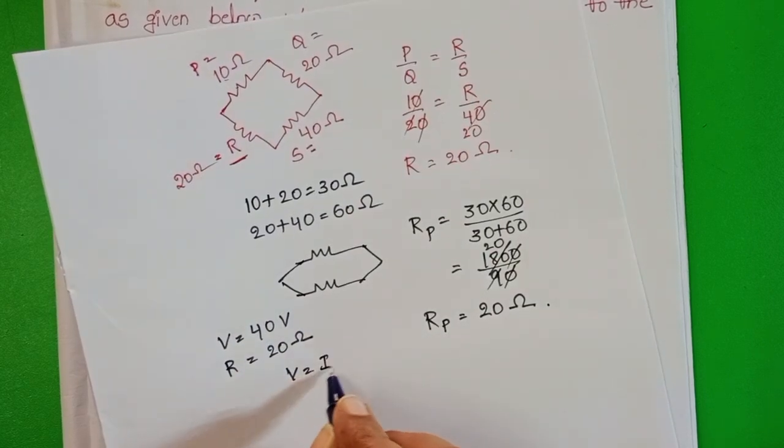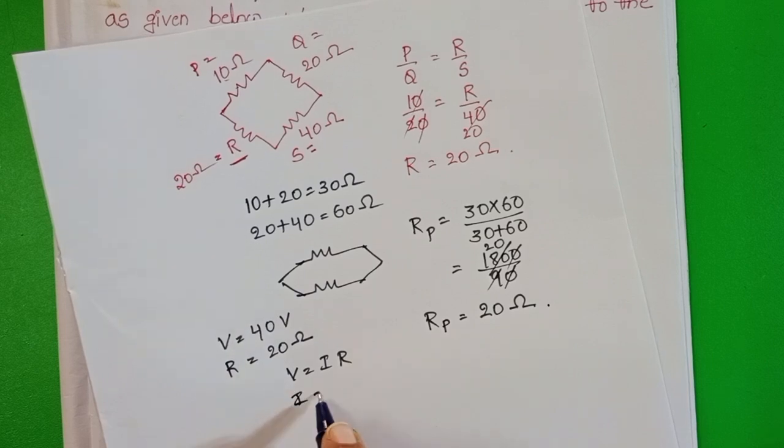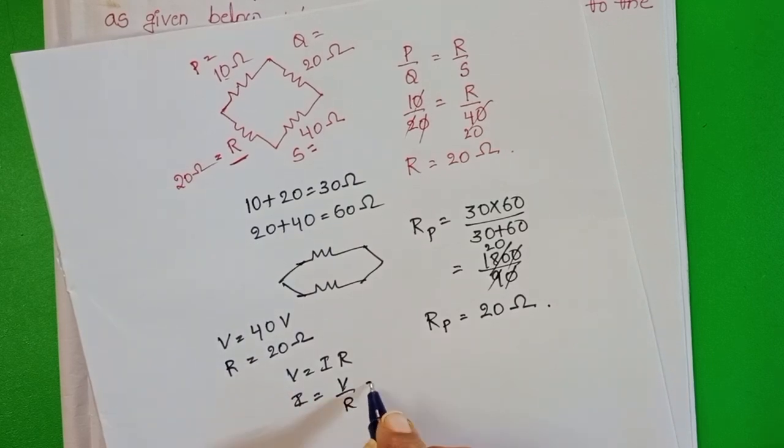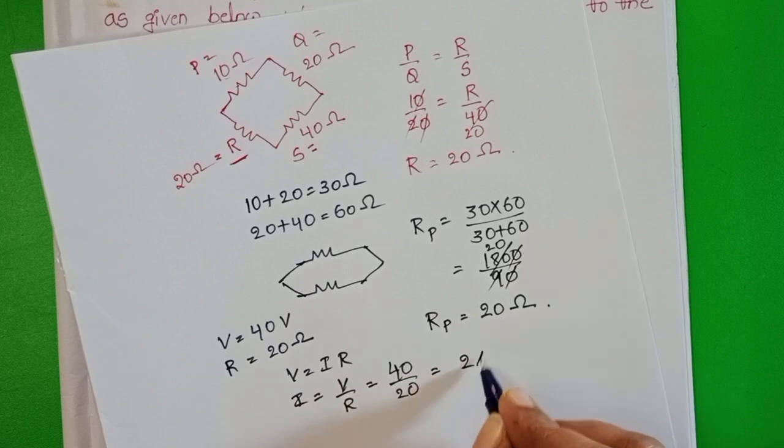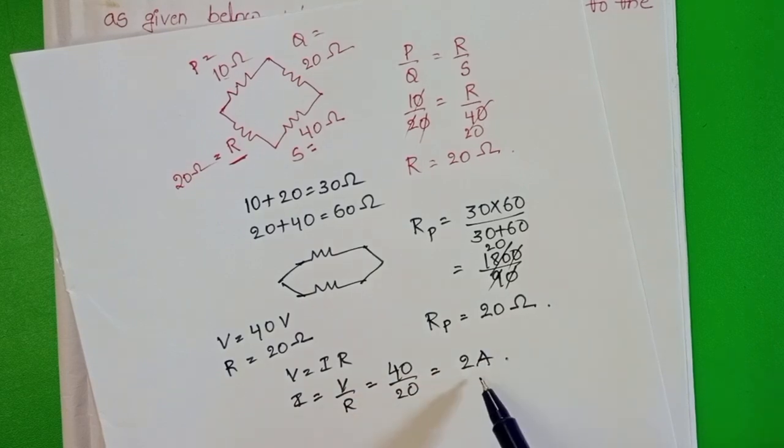Take Ohm's law. V equals IR. From this, I equals V by R. 40 by 20 equals 2 amperes. The current passing through the given circuit is 2 amperes.